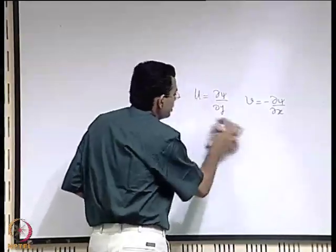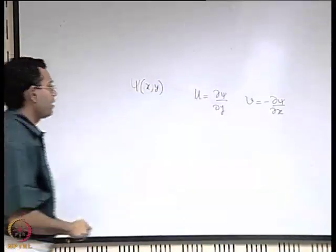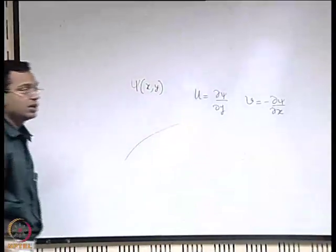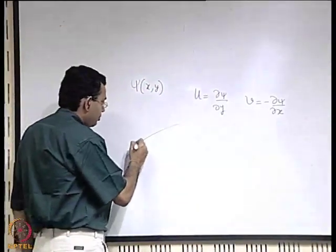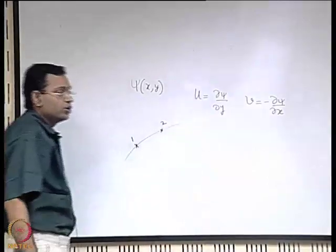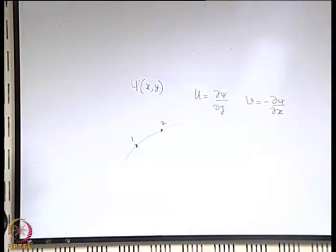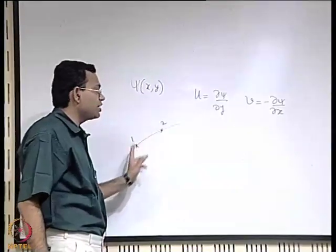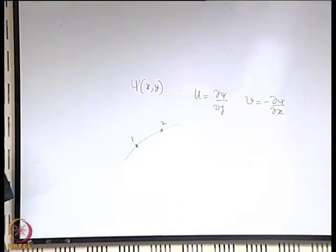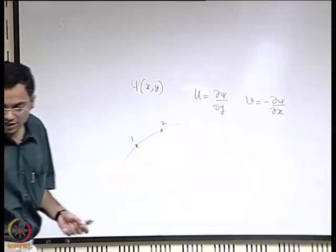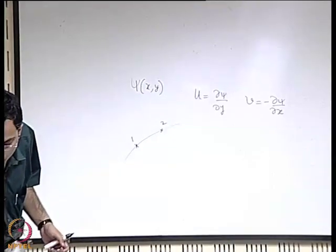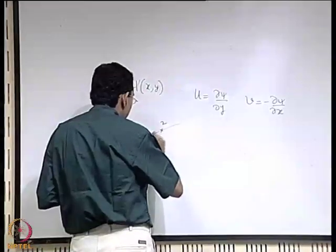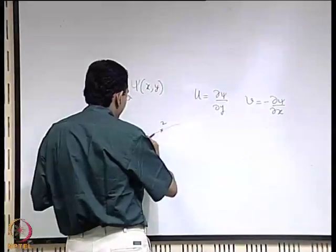The stream function also has some relationship with the rate of flow. To understand that, let us say we have some line element and we are marking two points 1 and 2. We are interested to find out what is the total rate of flow between these points 1 and 2. To do that, let us consider a small element within that domain bounded by points 1 and 2.